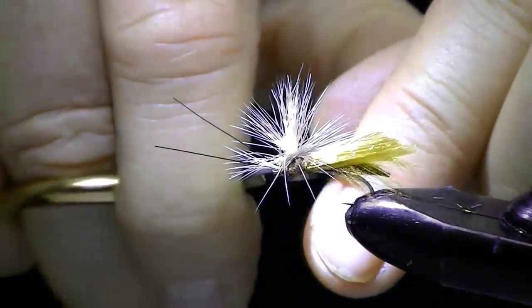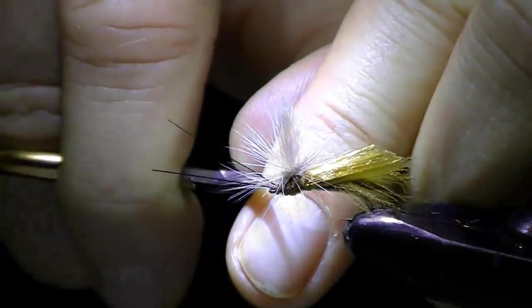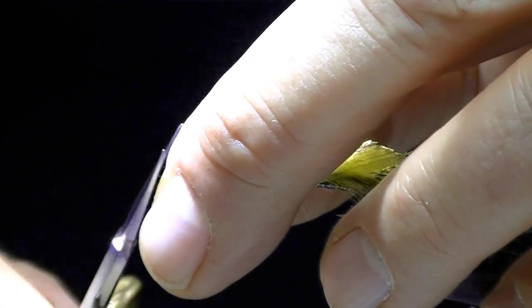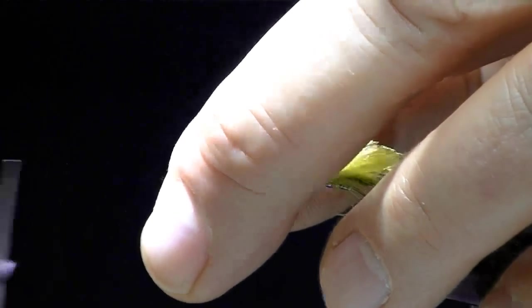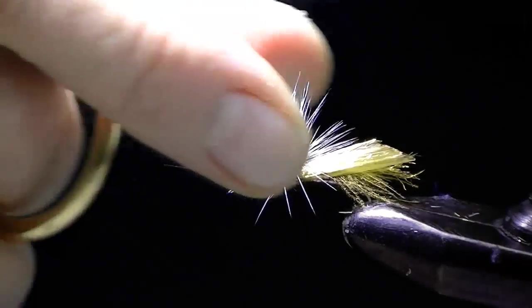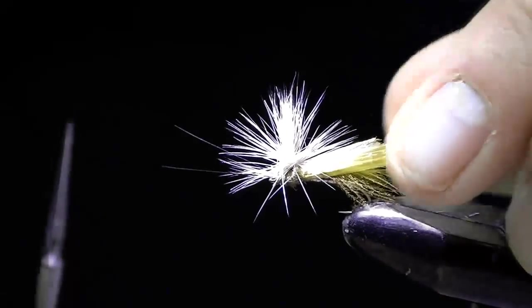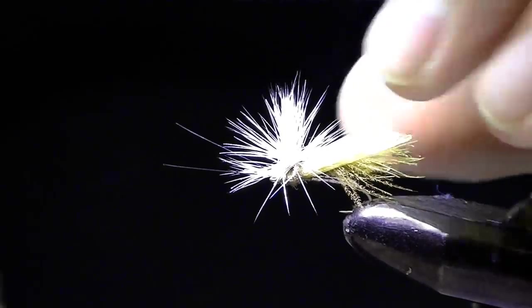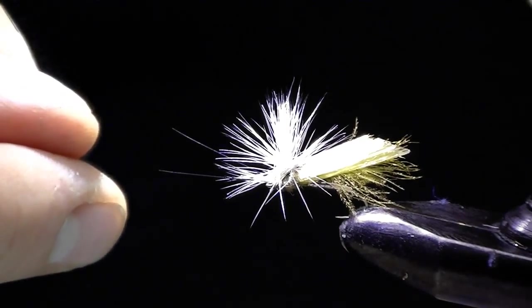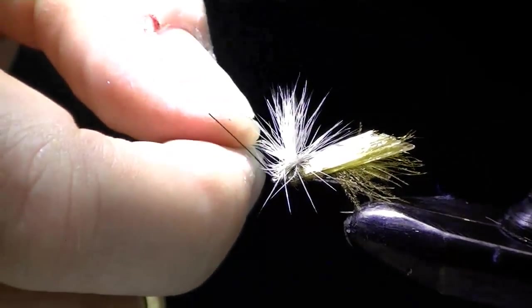You want the length of your shank, the length of your antenna. So these are just a wee bit long. Now I keep them nice and spread. Remember, the quality of the fly is also produced by trimming and cleaning the fly up afterwards.